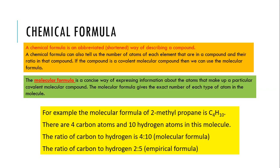We gave some examples of network structures like diamond, like graphite, and too many other examples like silica and silicon dioxide structures. At the end of class, I'm going to show you some pictures and diagrams of those shapes.